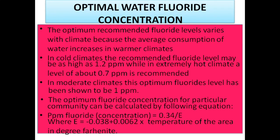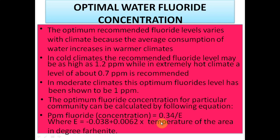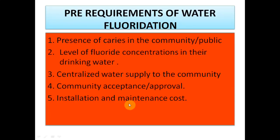The optimal fluoride level is not exactly 1 ppm but ranges from 0.7 to 1.2 ppm based on temperature. In high-temperature areas, 0.7 ppm is sufficient; in colder areas, 1.2 ppm is needed. This is calculated using Galagan's formula: 0.34 divided by e raised to (−0.038 + 0.0062 × temperature). Temperature is inversely proportional to the amount of fluoride required. Pre-requirements for water fluoridation include significant caries in the community, low fluoride levels, centralized water supply, community acceptance, and adequate installation and maintenance funding.